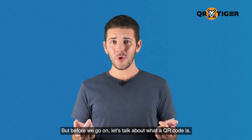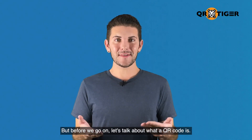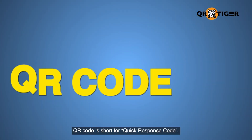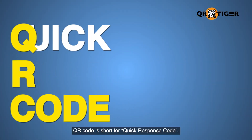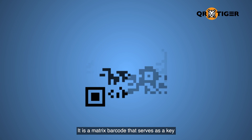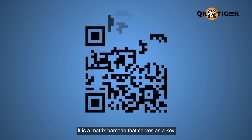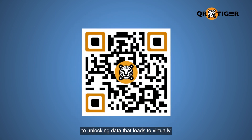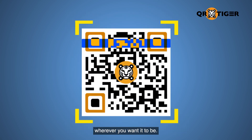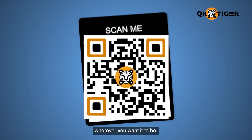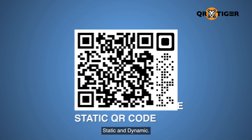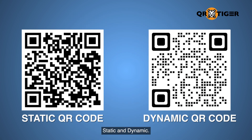But before we go on, let's talk about what a QR code is. A QR code is short for quick response code. It's a matrix barcode that serves as a key to unlocking data that leads to virtually wherever you want it to be. And there are two types of QR codes: static and dynamic.